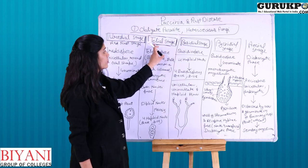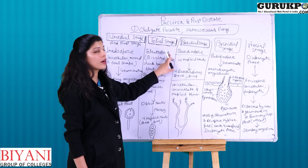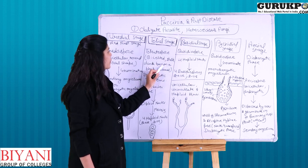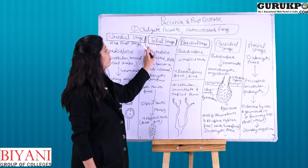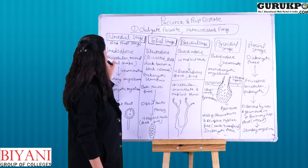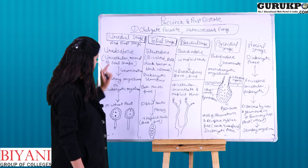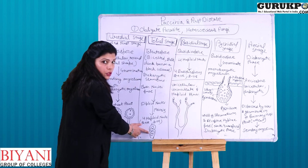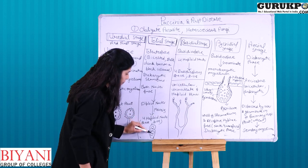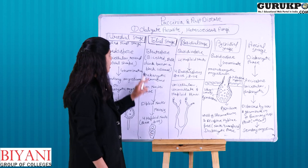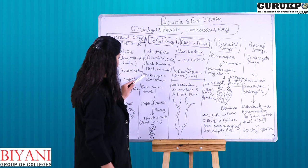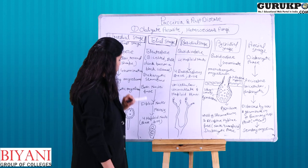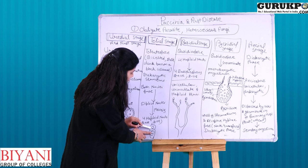The second stage is the telial stage. The telial stage involves teliospore formation. Teliospores are a bicelled structure with a stalk present and are dark brown to black in color, so we call this stage the black rust stage. The difference between uredial and telial stages is that uredospores are unicellular while teliospores are bicelled. Teliospores are also a dikaryotic structure, just like uredospores.